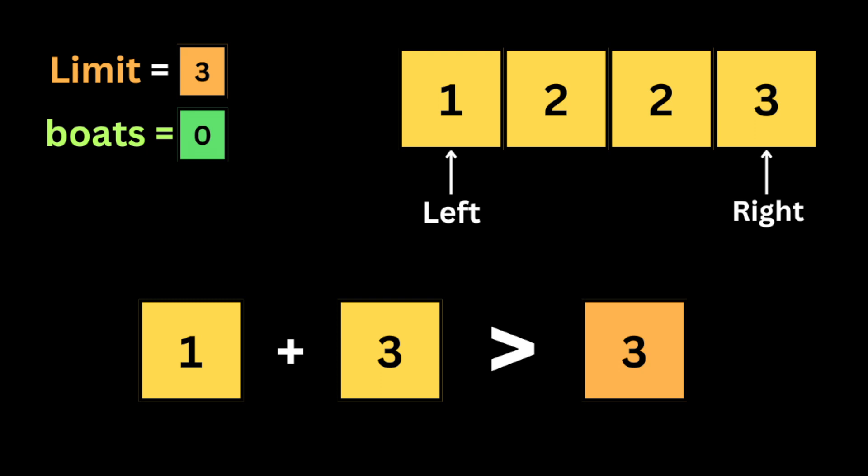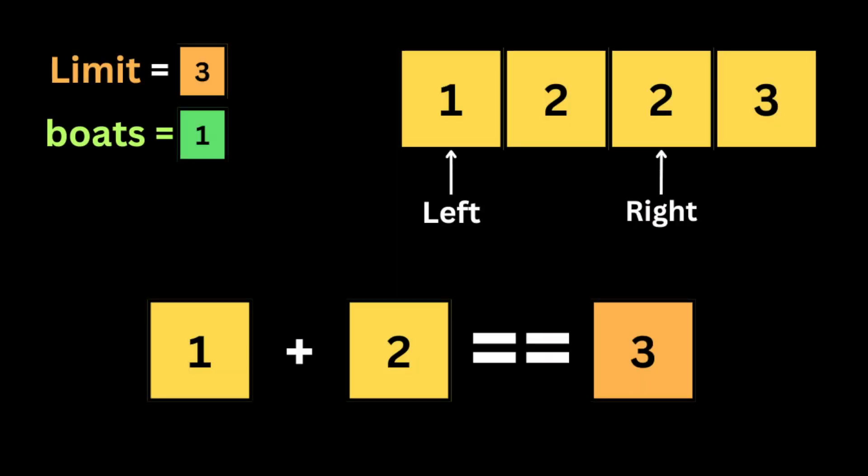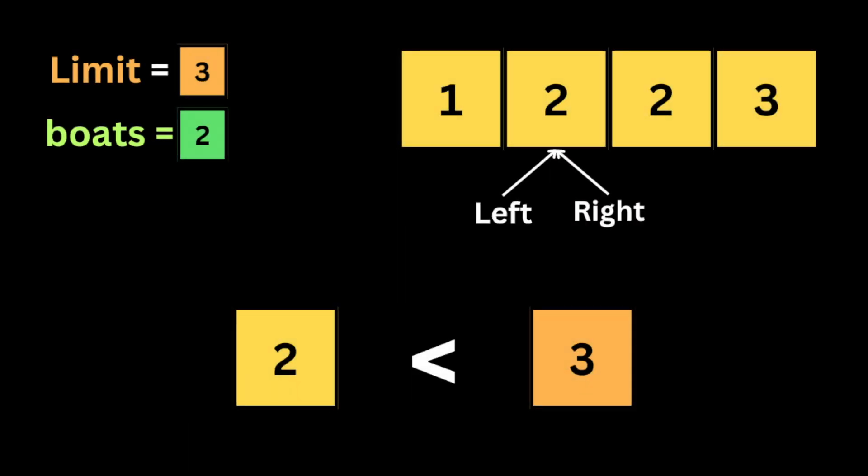If the sum of the values at the left and right pointers is bigger than the limit, we put only the person at the right pointer in a boat and move the right pointer one step left. If their sum is less than or equal to the limit, both people share one boat — we increment the boat count and move both pointers inward. When the two pointers meet, the remaining person travels alone in one boat.